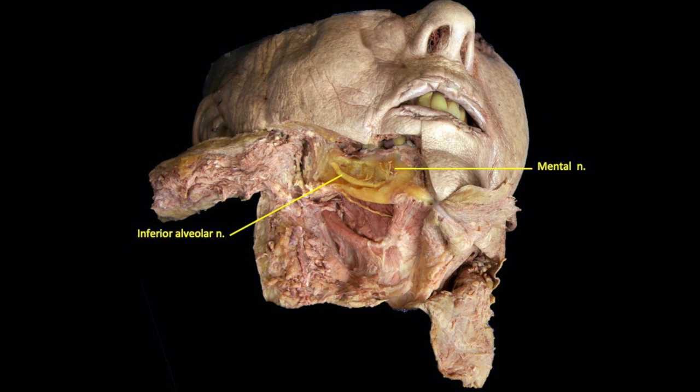In this last dissection, the lateral wall of the mandibular ramus has been removed to show how the inferior alveolar nerve traverses the mandibular canal to supply sensation to the lower part of the face by way of the mental nerve. If you have ever had dental anesthesia, now you can understand why your chin also went numb on the anesthetized side.